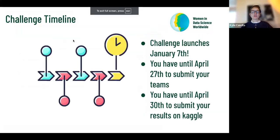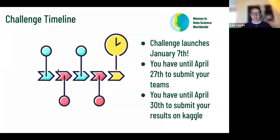To give you a challenge timeline: the challenge launched January 7th, so you can start working now — all datasets are available on Kaggle. You have until April 27th to register your teams, and then April 30th is when you have to submit your results on Kaggle, which is when the challenge ends. Around May 7th, you will get the results and winners. When you submit your results, you will automatically appear on a scoreboard because Kaggle will automatically grade your results.